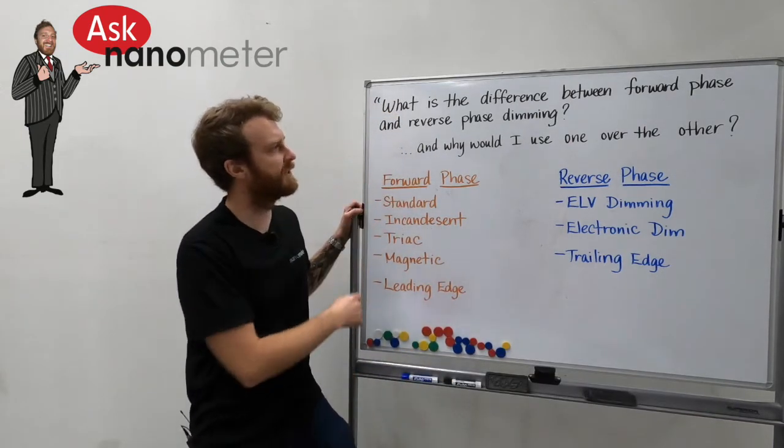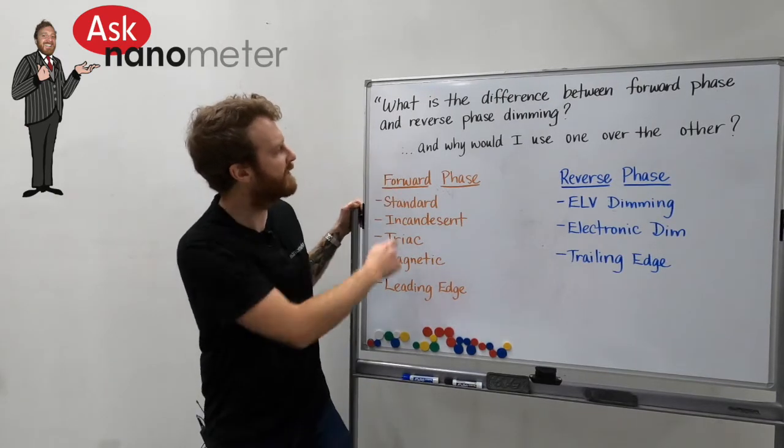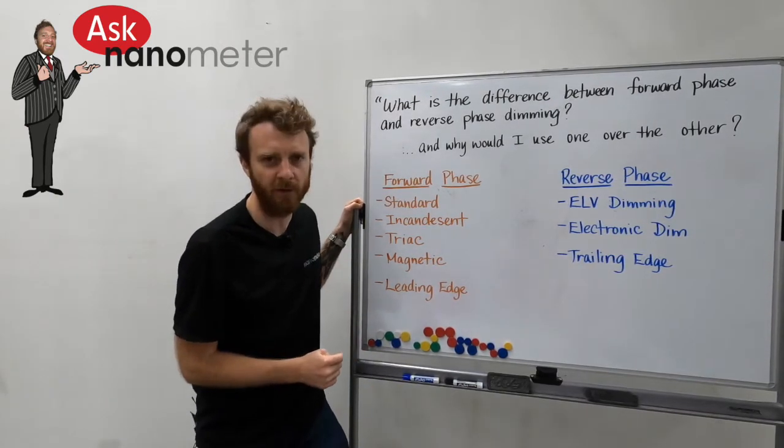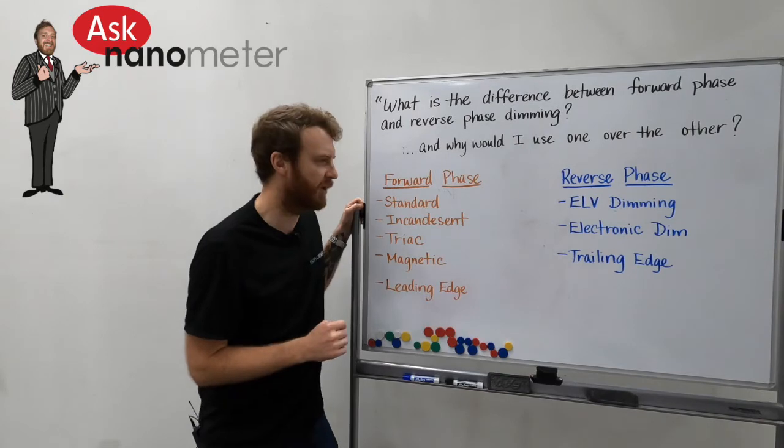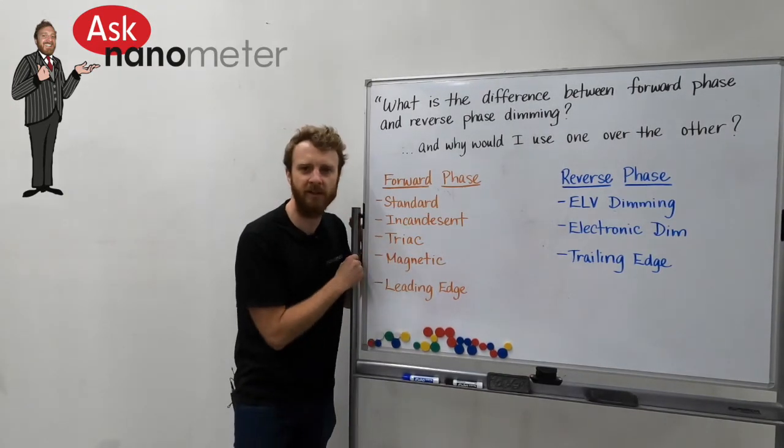Today's question: what's the difference between forward phase and reverse phase dimming and why would I use one over the other? Common question, often confused by the terminology that gets kicked around.